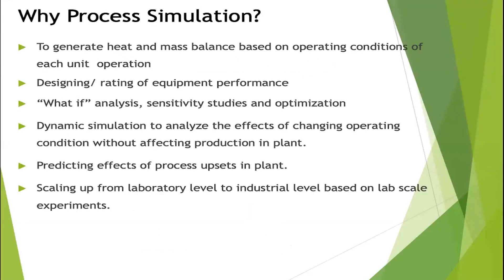Process simulation is needed to generate heat and mass balances based on operating conditions of each unit operation. Once your required plant output is fixed, you work out how much input is required. You also need to determine utility flow rates — like steam or cooling water — across the plant. The simulation results are used to design each equipment item.